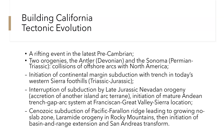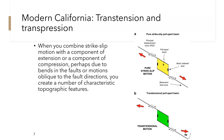We'll talk about that rifting throughout this presentation. The disappearance of the Farallon plate also helped create the San Andreas transform plate boundary, because once it was gone, the Pacific plate was able to move north relative to the North American plate and create that strike-slip fault. When you combine strike-slip motion with a component of extension or compression from bending, or motions oblique to the fault directions, you create a number of characteristic topographic features.